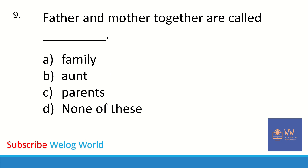Next question: father and mother together are called dash. Options are family, aunt, parents, or none of these. The correct answer is parents — father and mother together are called parents.